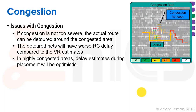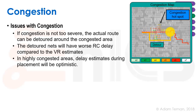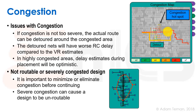One issue with congestion is that if there's a congested area that we need to route through, we can make a detour and go around it to finish routing without DRCs. However, the RC delay of that long detour route is much higher than a point-to-point route, meaning our virtual routing RC estimates will be wrong and we'll get optimistic delay values. A bigger problem occurs with severely congested designs — there will be high congestion hotspots we simply won't be able to route through, and those must be fixed.